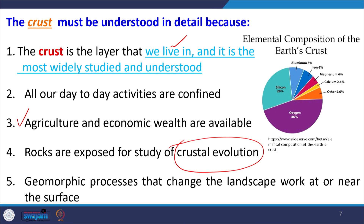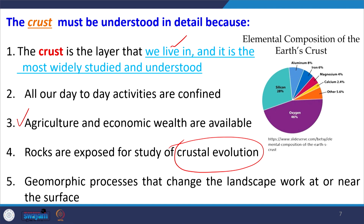Geomorphic processes change the landscape and work at or near the surface, modifying the earth crust. That is why the crust is very important to study. Additionally, it directly or indirectly affects the national economy — if the crustal composition is mostly metallic, a metal-rich crust adds to national economy. Groundwater availability also depends on crustal composition: in the Deccan granitic terrain there will be groundwater problems because the composition does not allow groundwater storage, whereas in the Ganga plain or coastal plains of India, which are mostly alluvium, there is plenty of groundwater.